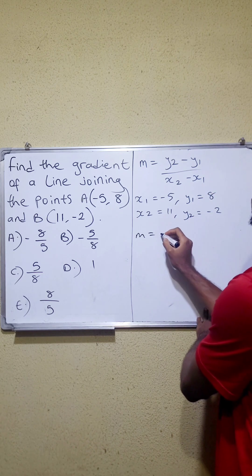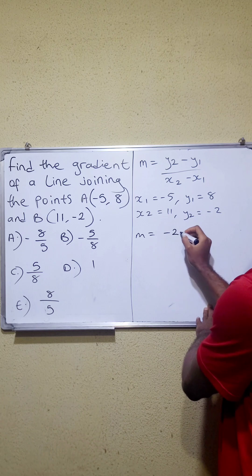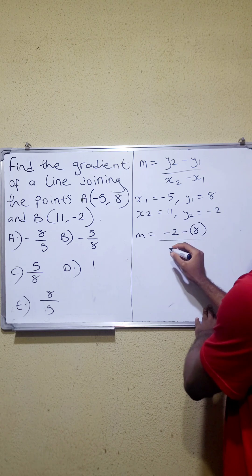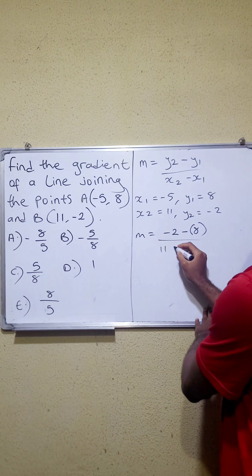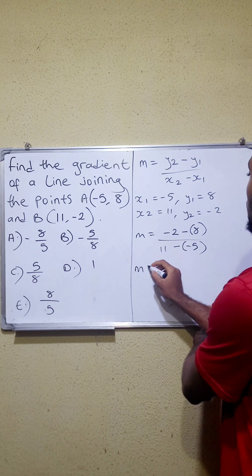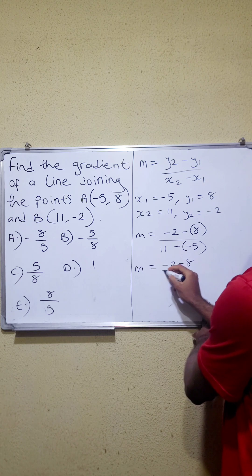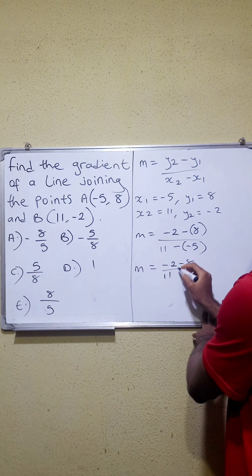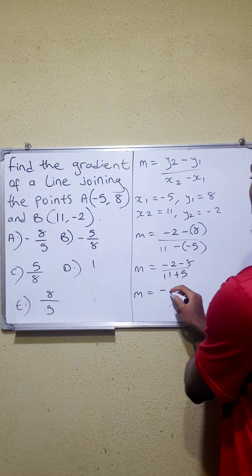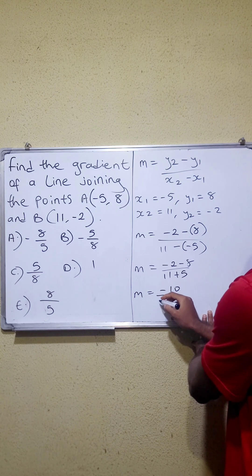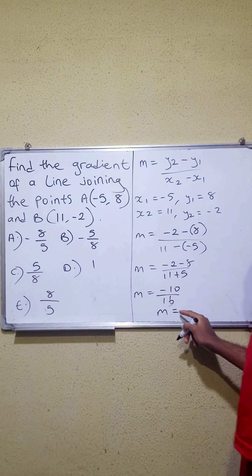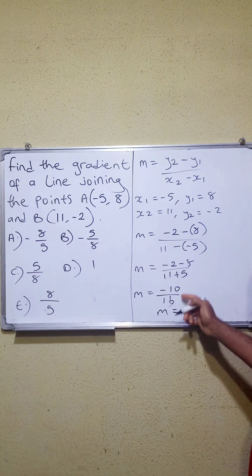We have m = (-2 - 8) / (11 - (-5)). This becomes m = (-2 - 8) / (11 + 5). m = -10 / 16. When you reduce this to the lowest form, you can divide by 2.